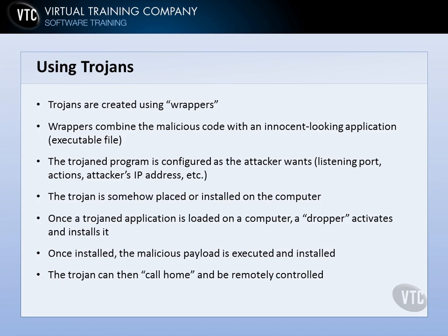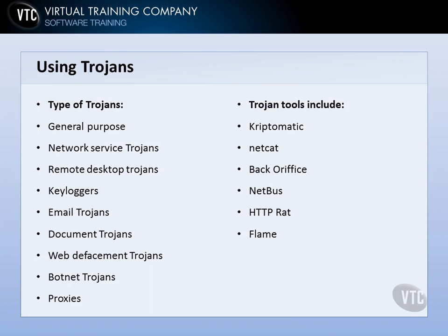Once that happens, the Trojan can do whatever it wants — it can call home, be remotely controlled, start keystroke logging and report those keystrokes back, whatever its intended purpose is. There are some general types of Trojans, and this list is by no means conclusive. You can come up with any reason to have a Trojan and create one just for that.